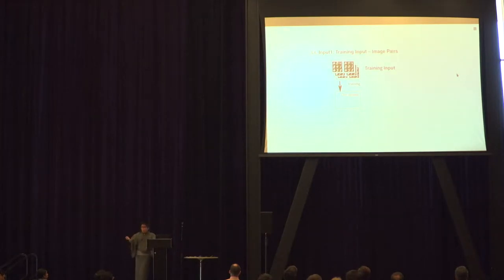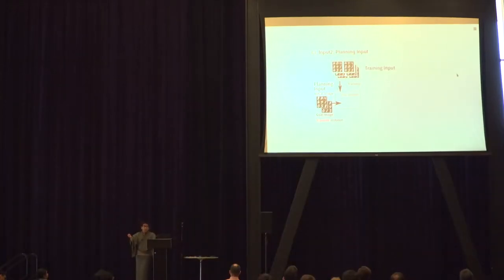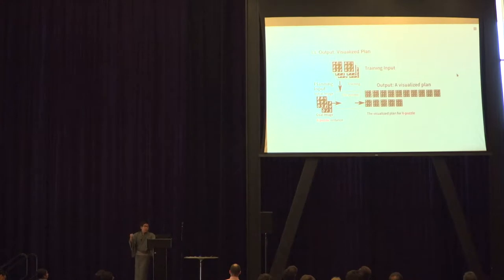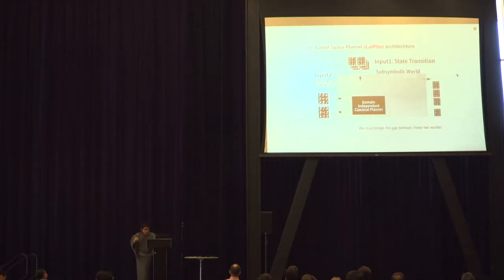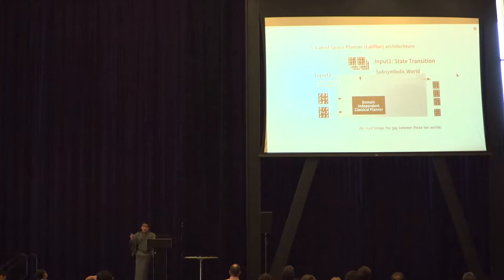From the training input, the system learns some environment state transitions. Given the planning input depicting the initial state and goal state, it tries to output the visualized plan execution as images. At its core, there is a Fast Downward classical planner. But the problem is the input is sub-symbolic while the planner needs to be symbolic, so we need to bridge the gap between these two representations.